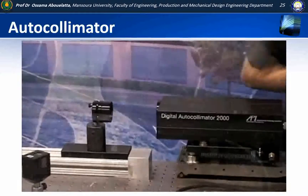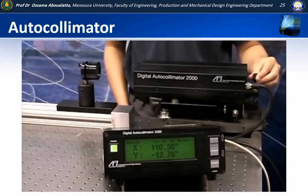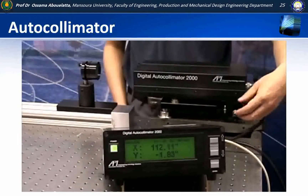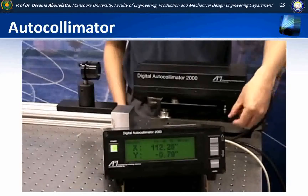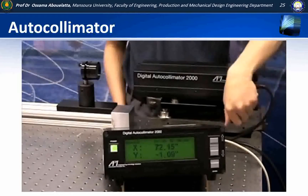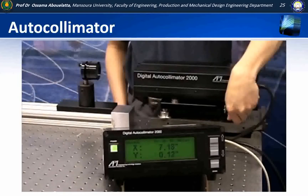The digital autocollimator can be operated using a computer and the included software, or simply by using the interface on the control box. Shown here, the angular deviation is displayed on the control box readout to aid in final adjustments. Typical system alignments are completed within just a few minutes.